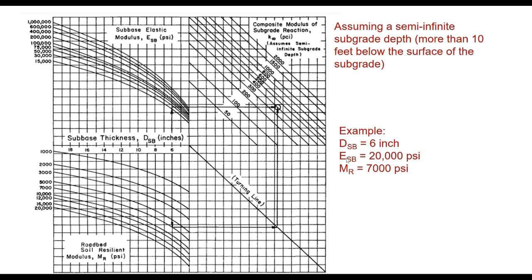If you take one example, let us say the subbase thickness is 6 inches, the modulus value of subbase is 20,000 psi, and M_R value of soil subgrade is 7,000 psi. Then we enter this chart from subbase thickness d_SB of 6 inches, and simultaneously we enter this chart from the same thickness to the roadbed soil resilient modulus.